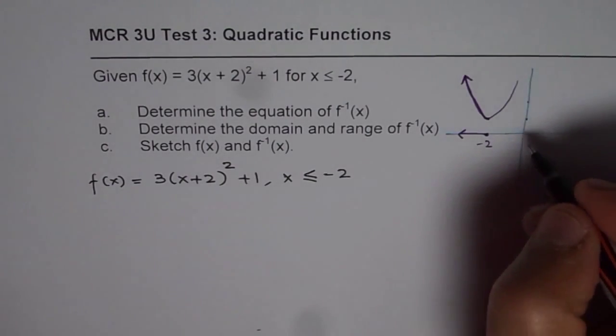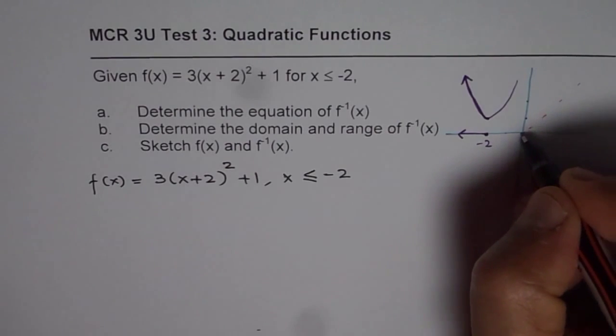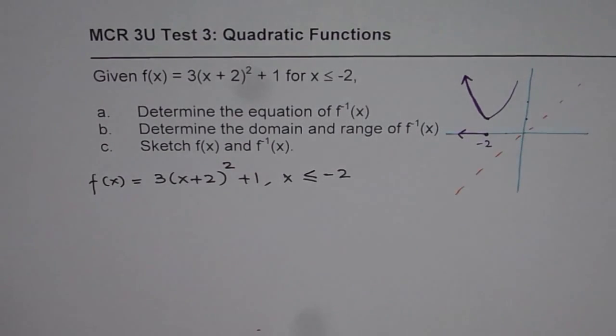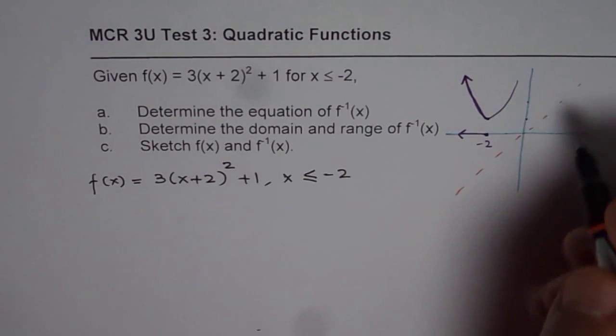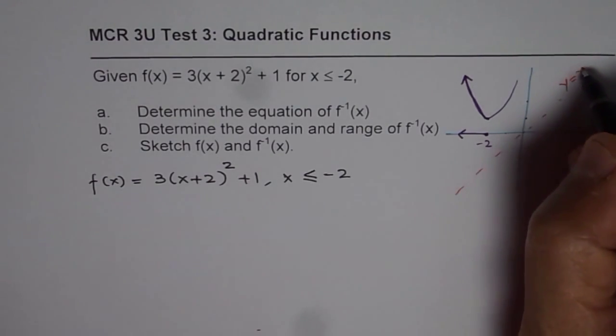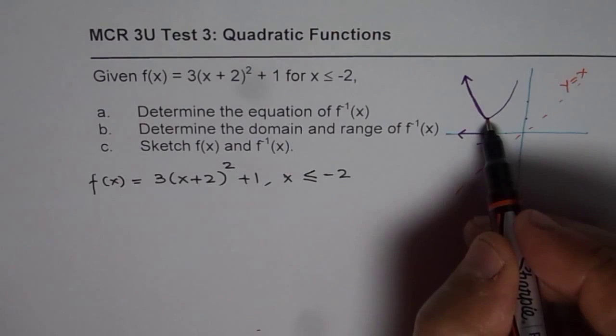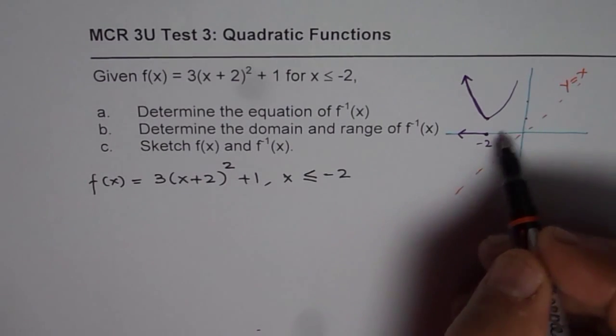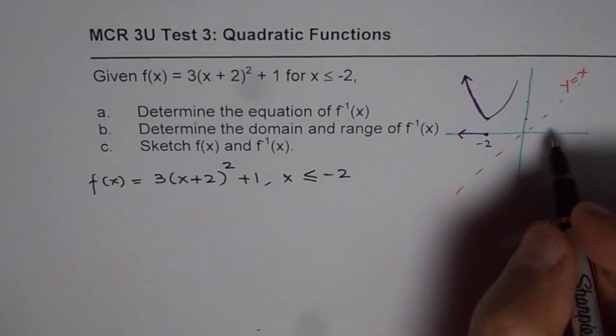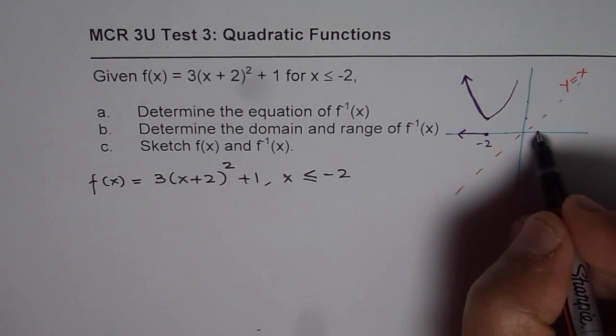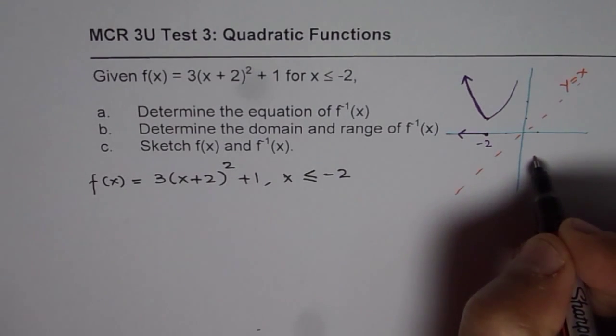So when you do inverse of this function, which graphically you could do by reflecting on y = x line, this point is minus 2, 1. Then the coordinates will change. It will come to 1, minus 2.